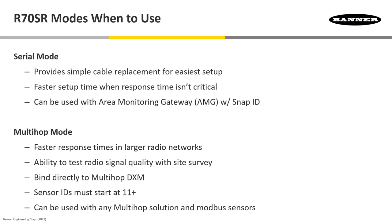They also can be utilized with the Area Monitoring Gateway with SNAP-ID or the AMG kits. Multi-Hop Mode is also available on these radios, and they allow for faster response time when you have larger radio networks, the ability to test the signal quality with a site survey, and bind directly to a Multi-Hop DXM industrial controller.